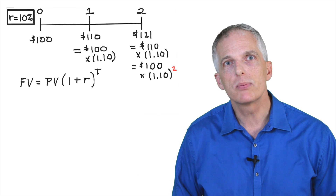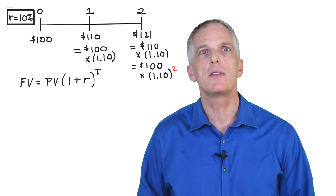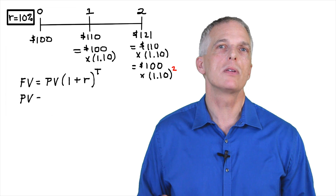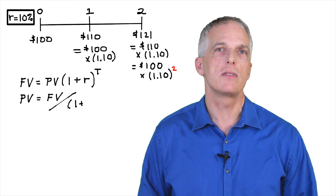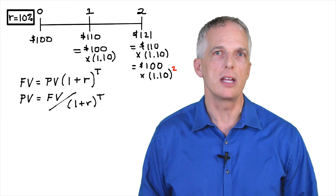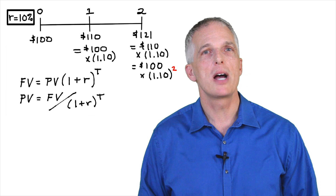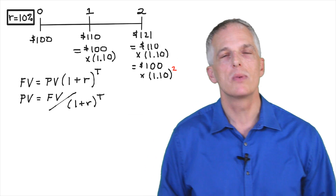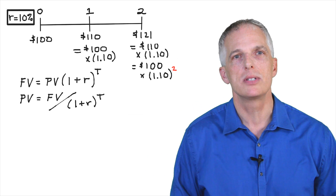Similarly, the present value of an investment, PV, is equal to the future value of the investment, FV, divided by one plus the interest rate R, raised to the power T.